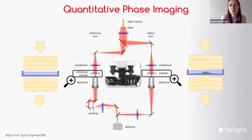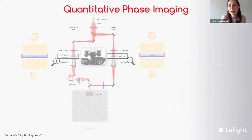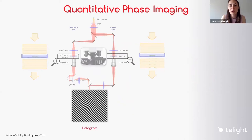Then you bring these two beams back together and let them interfere. At the camera plane, at the detector, you actually detect a hologram — the interference pattern that you see in the image, consisting of interference fringes.